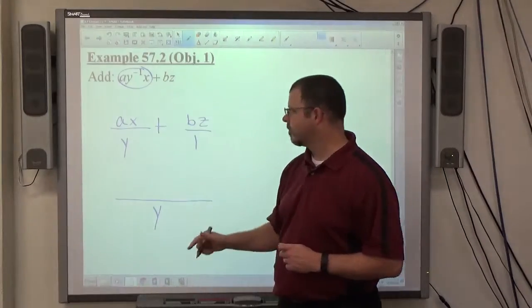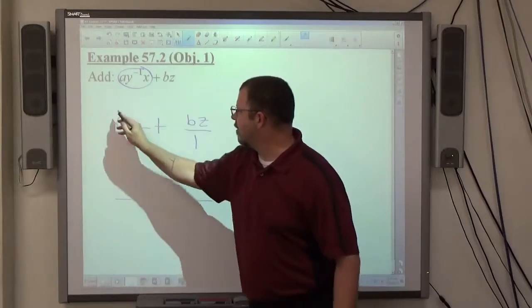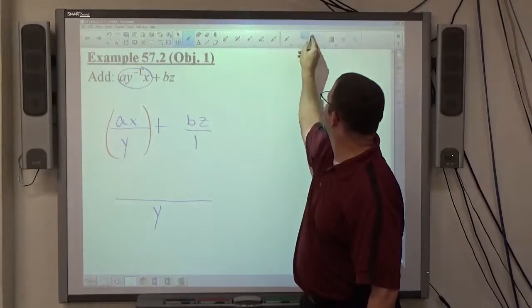All right, so the least common denominator of one and Y is what? Y. Very good, Y. Then we have two fractions. Fraction one is A, X over Y. Fraction two is B, Z over one.